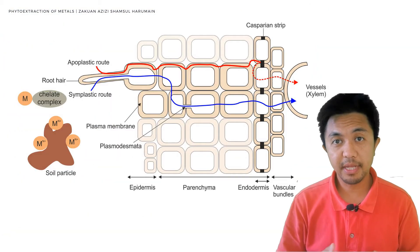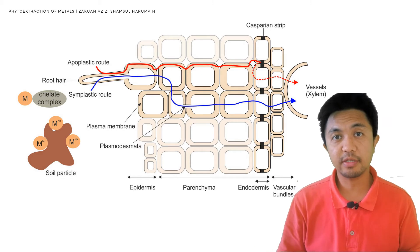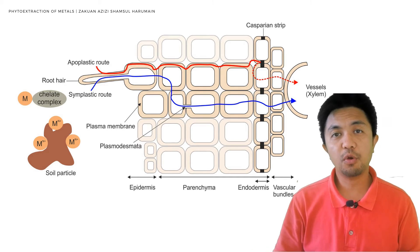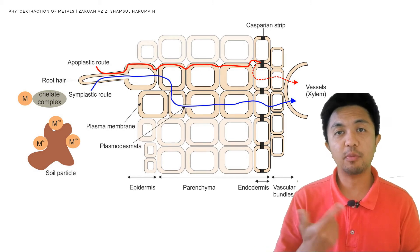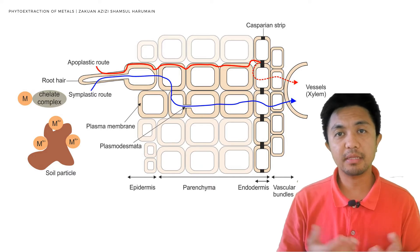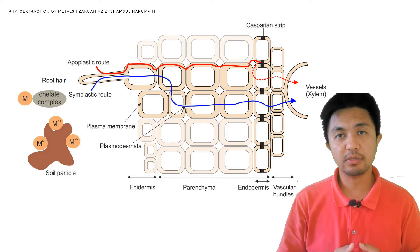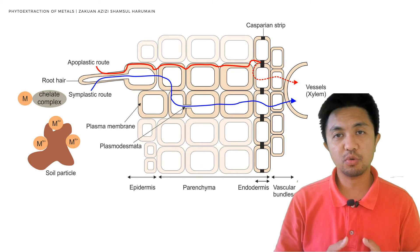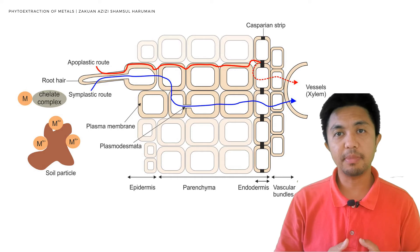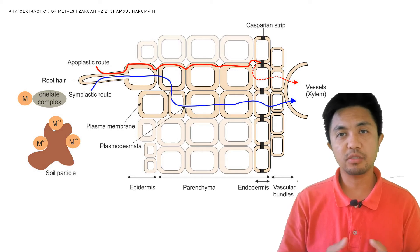Subsequent metal uptake and accumulation may involve several steps. Metals can either follow a symplastic or an apoplastic route. In the symplastic route, the metal ion will cross the plasma membrane of the root cells through transporters such as channel proteins and will diffuse between the cells through the plasmodesmata bridges.